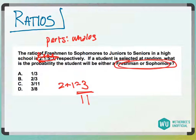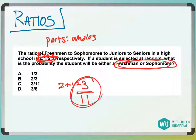Remember — parts to wholes. These are all the parts, and the whole is adding them all up, so we get 3 over 11, answer choice C.